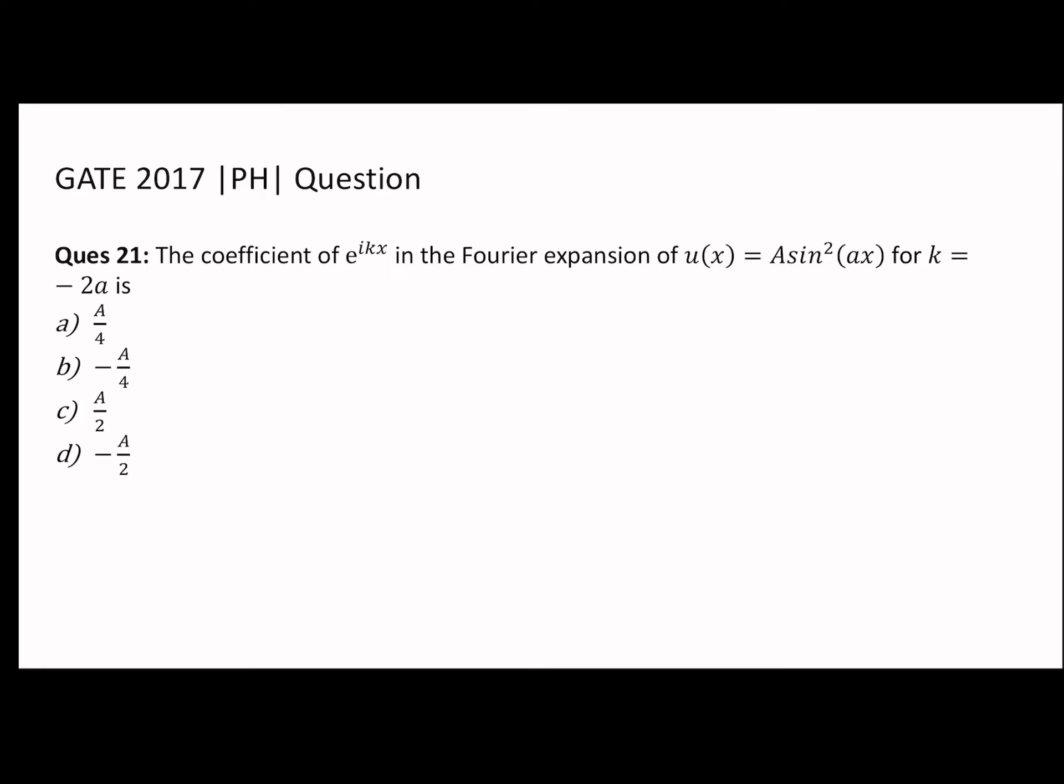We know that this is an exponential form, so the Fourier series in complex notation can be written as the sum from n = -∞ to +∞ of c_n e^(-ikx). This is a Fourier series in exponential form.